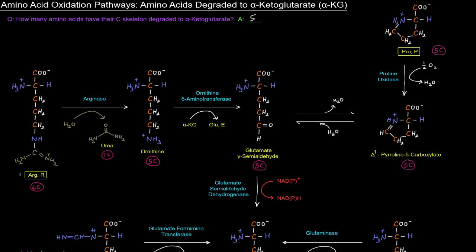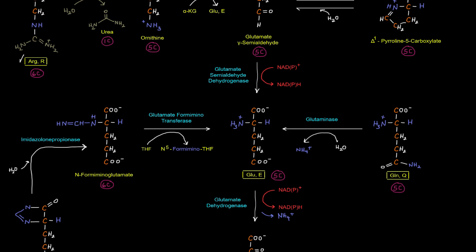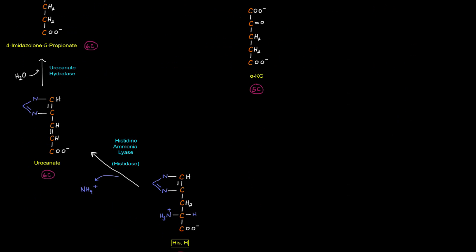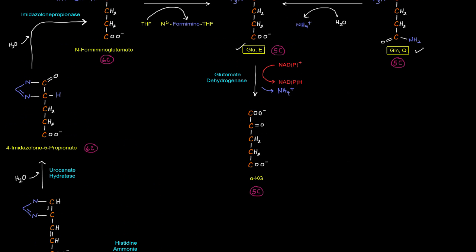They are one, arginine, two, proline, three, glutamine, four, glutamate, and five, histidine. Okay, so let's see what's going on with those.